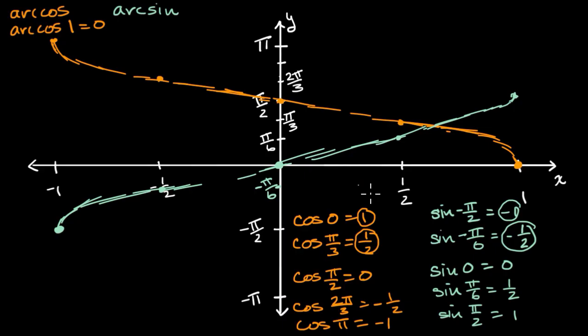Our domain is restricted between negative one and one. Because if you think about a sine or cosine function, its range is restricted to between one and negative one. And so now we have flipped things because we're looking at the inverse function.